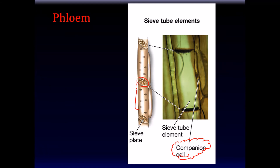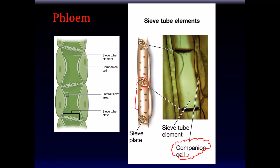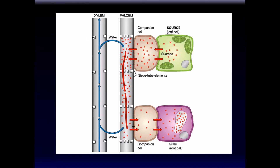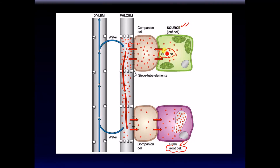Each sieve cell is associated with a companion cell — its support and brains. The companion cells are very important in the transport of sugars. When sugar needs to move from a leaf cell where photosynthesis occurs, it is the companion cell that regulates that flow. The companion cell takes sugar from the source and, by an energy-requiring process, places it into the flowing tubules of the sieve cells. The sugar then flows to where it's needed — the sink, such as a root cell. Sugar in the form of sucrose is delivered to the sink with the help of companion cells.